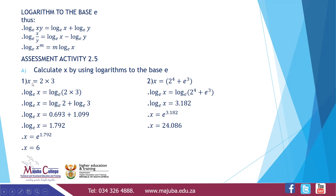Assessment activity 2.1 — calculate x using logarithms to base e. Example: x equals 2 times 3. We introduce logs on both sides: log base e of x equals log base e of 2 times 3, which equals log base e of 2 plus log base e of 3. Punching into a calculator: 0.690 plus 1.099 equals 1.792. So log base e of x equals 1.792, meaning x equals e to the 1.792, giving x equals 6.